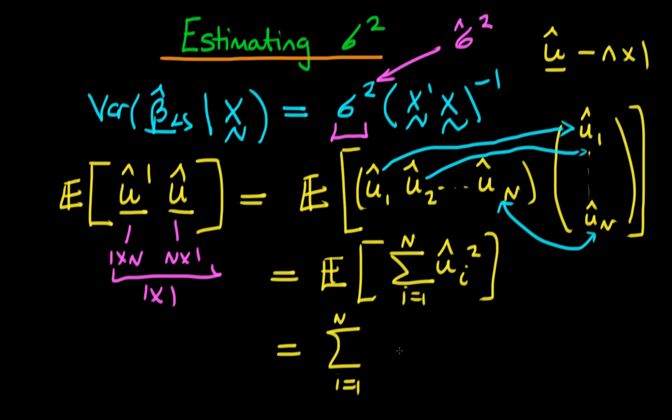this should just mean that we're going to have that the expectation of u hat prime times u hat is equal to the sum from i equals 1 to n of the expected value of u hat i squared.